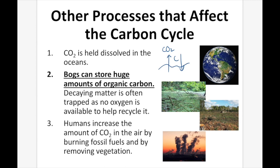Humans increase the amount of carbon dioxide in the air by burning fossil fuels and removing vegetation. Clear-cutting and burning forests releases a lot of carbon dioxide, and removing trees reduces our ability to take carbon out of the air through photosynthesis. Burning fossil fuels also releases significant carbon dioxide. If we heat up the earth, we increase the carbon dioxide released from the oceans due to more evaporation, changing the balance between ocean and air carbon concentration levels. These human activities significantly increase atmospheric carbon dioxide and alter the carbon cycle.